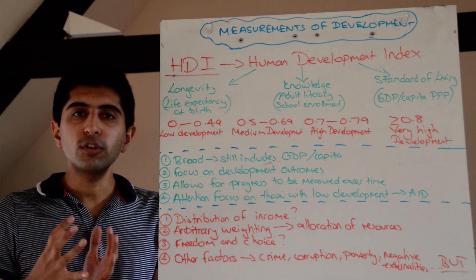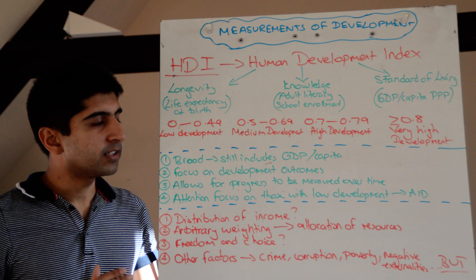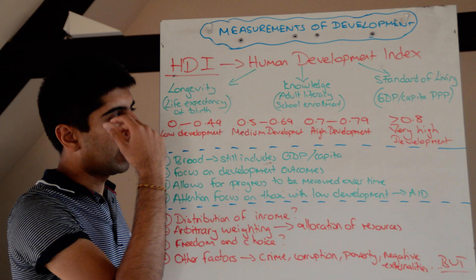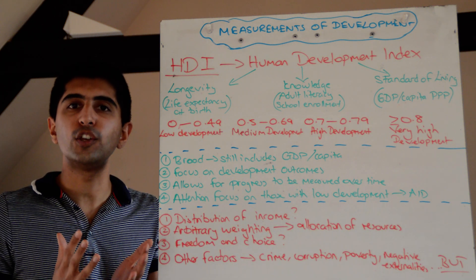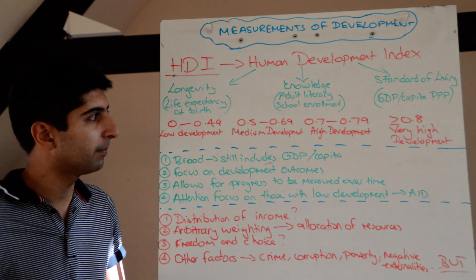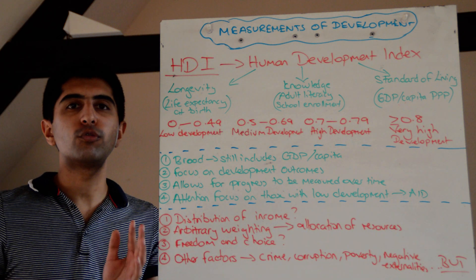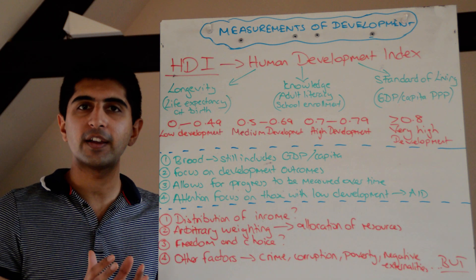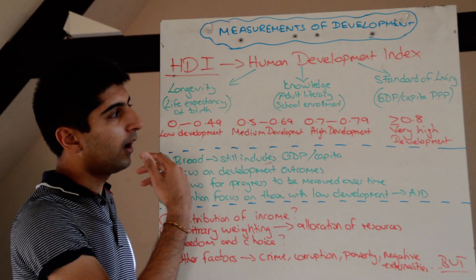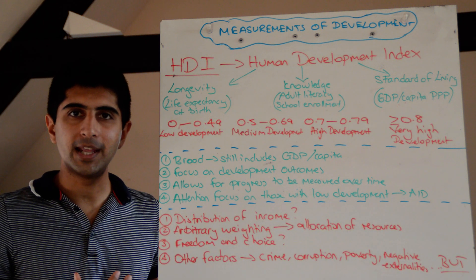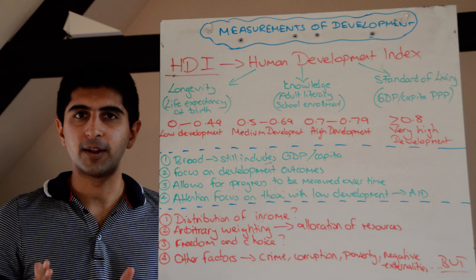So together, these three things are calculated, put into the index, and weighted equally. Given the mathematical calculations involved, a figure is generated which is the Human Development Index for a given country. The numbers range between zero and one — one representing perfect development, whereas zero implies that development is completely non-existent.